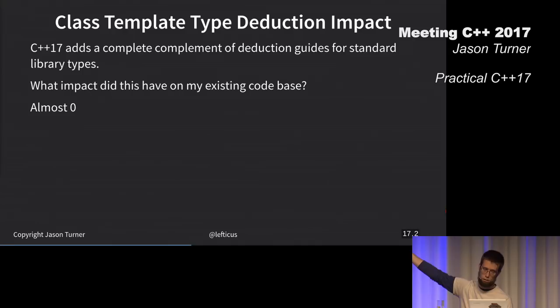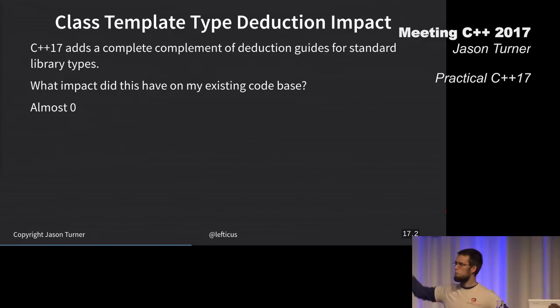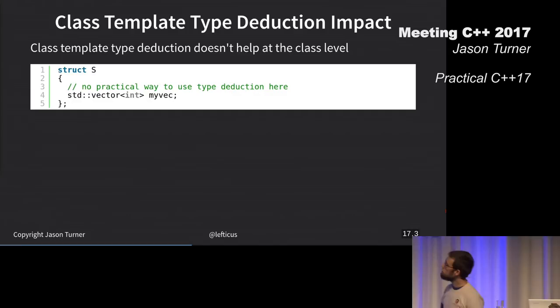I'm going to put up my examples here. You can argue back with me if you'd like. If I've got my vector that's declared at class scope, I cannot use class template type deduction here, right? Because there's no meaningful way to. I can't initialize it with anything here. I have to just give it its type. It's a vector of event, hypothetically. Vector of whatever.